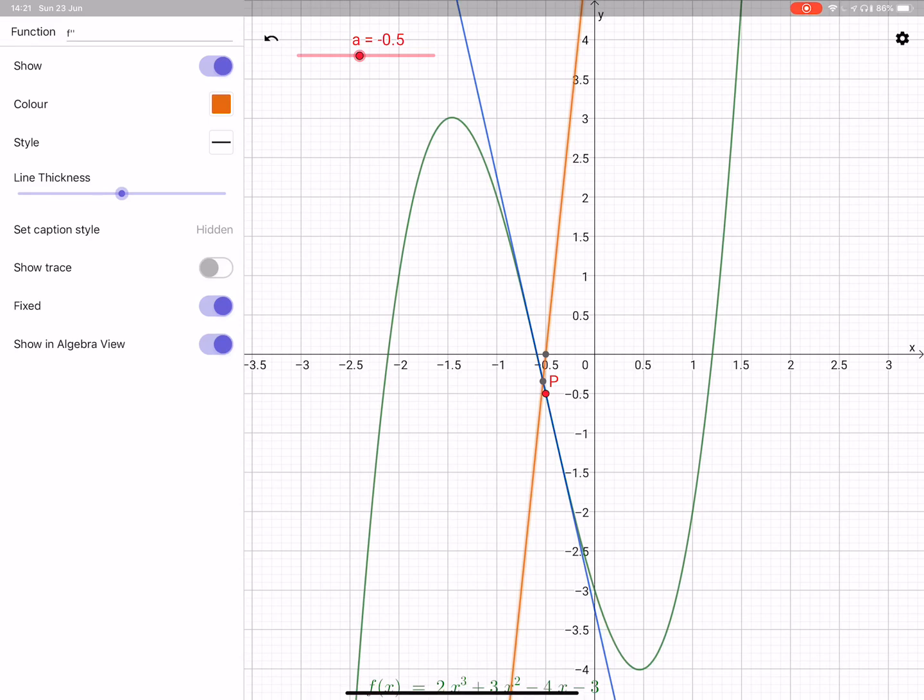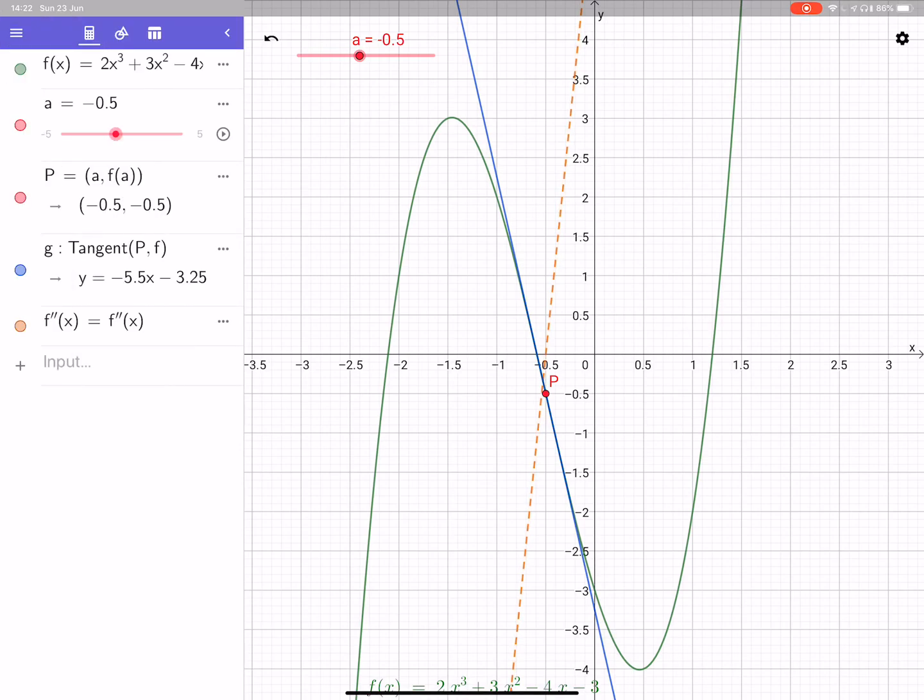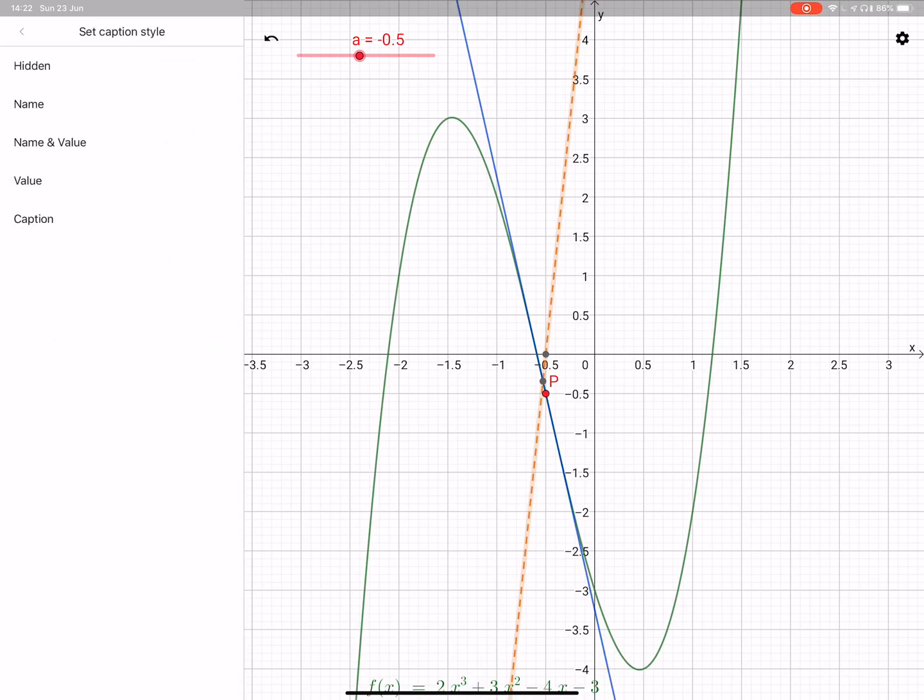So let's go for style and change it to a dash line. Okay, so learning some tricks here. Settings and then we'll put in the value in, we'll just keep that hidden. Okay, it doesn't look very nice. Okay, anyhow, so there we go. We can see at the point of inflection at the moment that the second derivative is actually equal to zero.